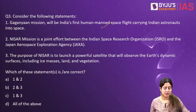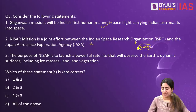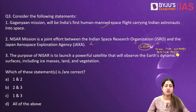The second statement talks about the NISAR mission. It says NISAR is a joint effort between ISRO and JAXA, the Japan Aerospace Exploration Agency. This statement is invalid because NISAR is actually a joint venture between ISRO and NASA. NISAR stands for NASA-ISRO Synthetic Aperture Radar. The intention is to use radar imaging technology to study some of the most intricate and complex processes of the planet. So the second statement is invalid.